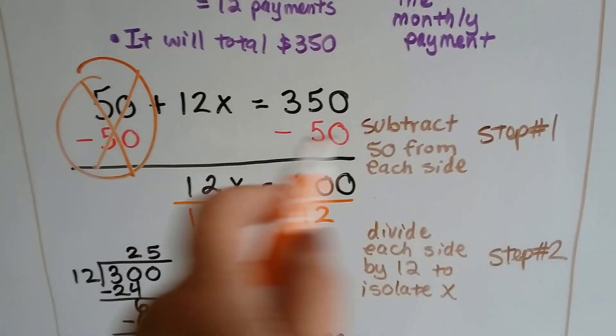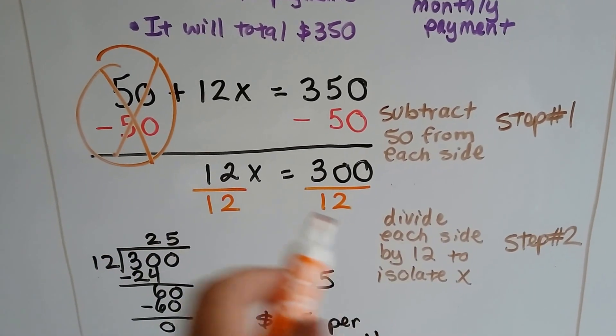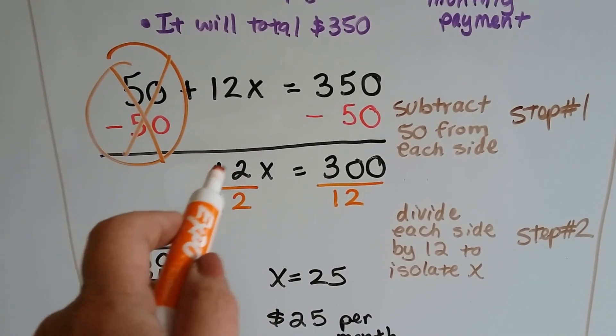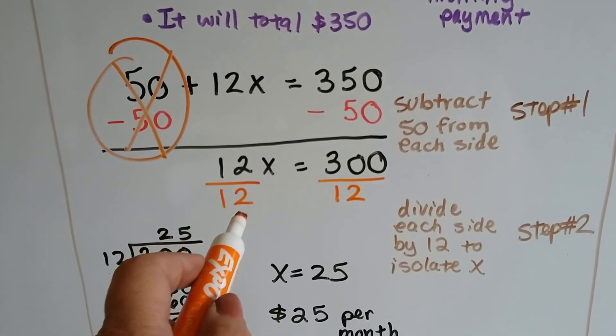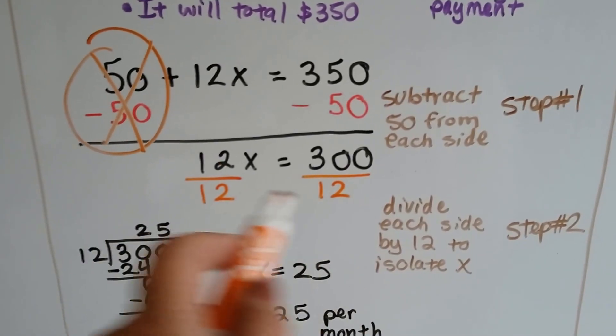That was step 1, subtracting 50 from both sides. Step 2 is, because 12x means 12 times x, that's multiplication, the inverse to get rid of this 12 and to get x by itself would be division. So we're going to divide both sides by 12.